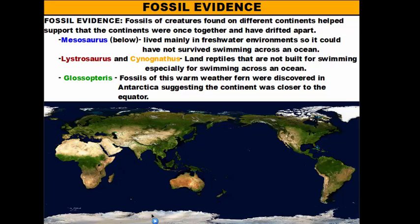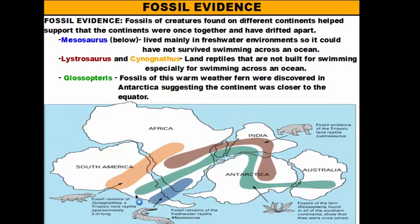For these organisms to populate different land masses without being able to swim great distances, those land masses must have been together — allowing the travel of these organisms to the different continents where their fossils were found. So Cynognathus and Lystrosaurus, given their poor swimming ability and where they were found, help support the idea that the continents were once together and have drifted apart.